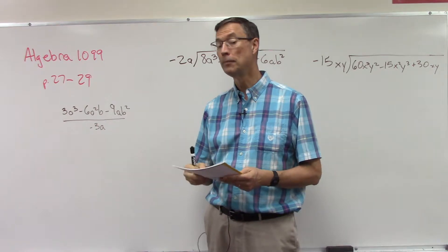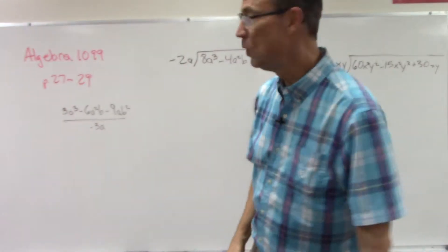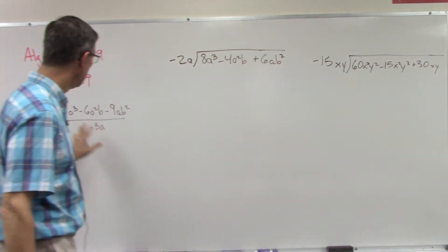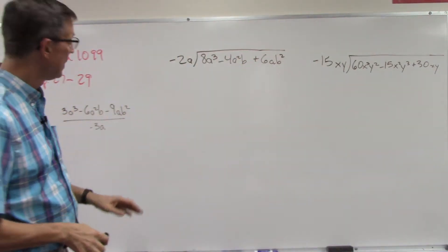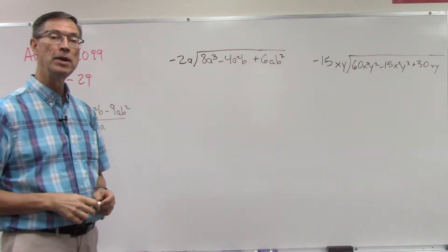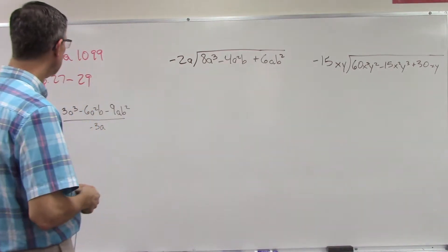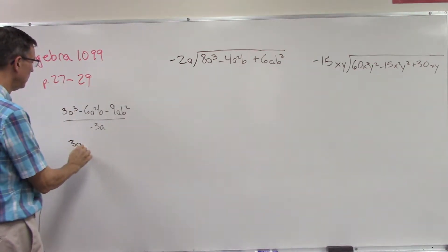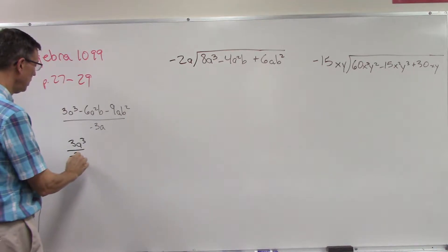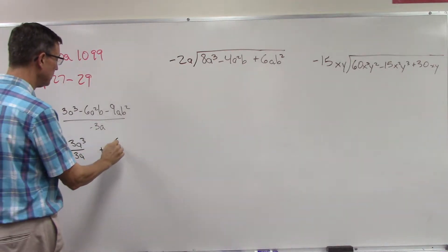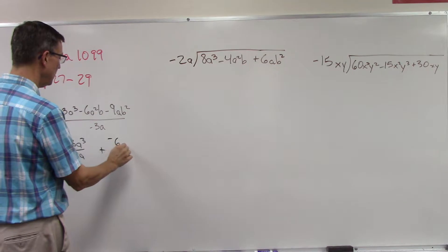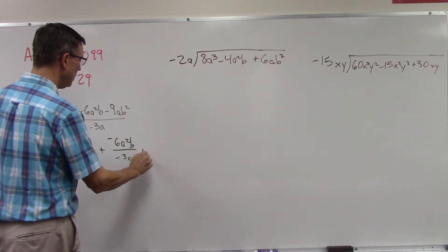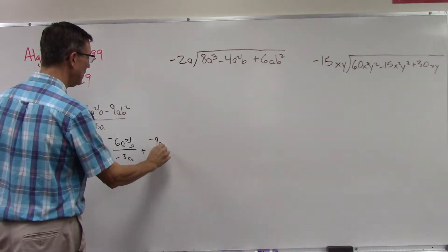We're going to do that right now. On page 27, first of all we have what's called a trinomial, three terms, and we're dividing by a single term, a monomial. The simplest way to do these is to write each one over the common denominator by itself. I'm going to give myself a little more room here. Negative 6a squared B, and write that over negative 3a. Then negative 9aB and put that over negative 3a.